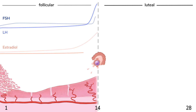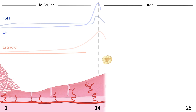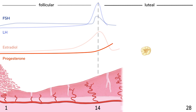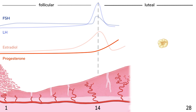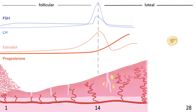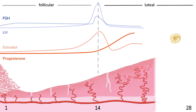Once ovulation occurs, the remnants of the follicle transform into the corpus luteum, and we enter the luteal phase of the cycle. The corpus luteum secretes progesterone. The switch from estrogen dominance to progesterone causes a drastic change in the endometrial lining, transforming proliferative endometrium into secretory endometrium. Secretory endometrium has more tightly coiled glands that secrete a rich mixture of glycogens and glycoproteins to help support a growing pregnancy, should implantation occur.